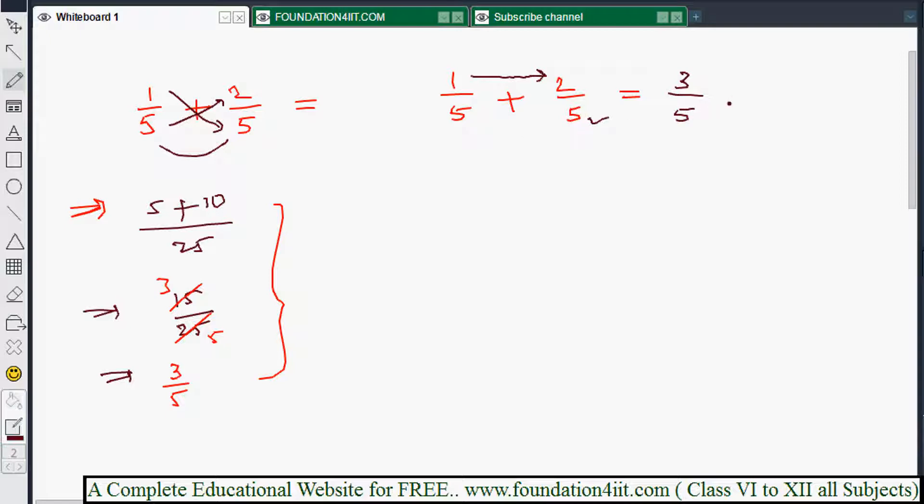And whatever the denominator, because denominators are same, right? Same denominator you can write here. That's it. So 3 by 5. This is also 3 by 5. That means whenever denominators are same, you can call them like denominators. So it's very easy. Just add the numerators together and put the denominator as it is.